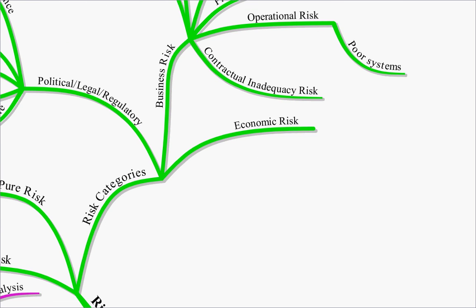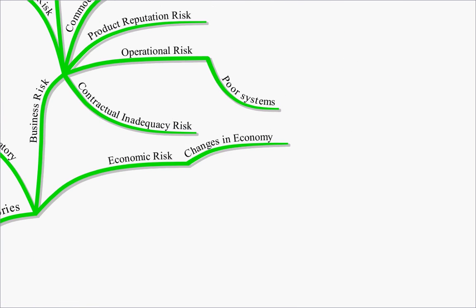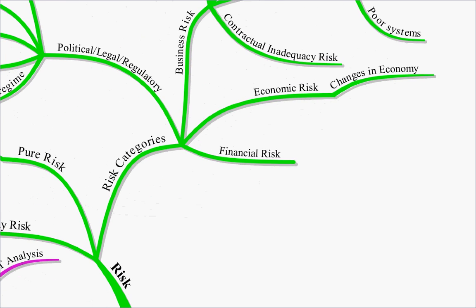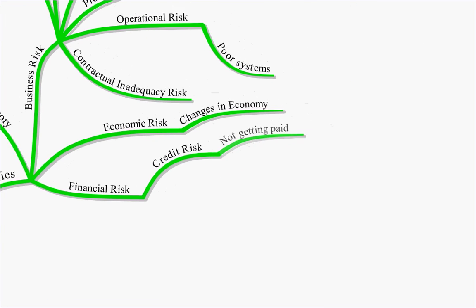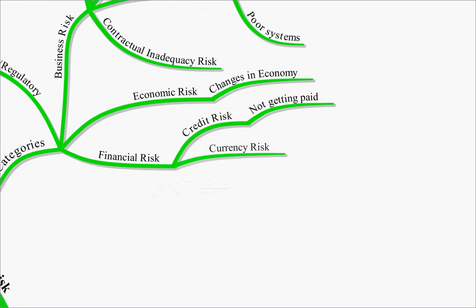Economic risk then. This was just the risk that there are changes in the economy. And this also relates to financial risk. Financial risk covers several aspects. There's credit risk - that's just the risk of not getting paid. There's currency risk - the risk that currency movements go against you and you make a loss.